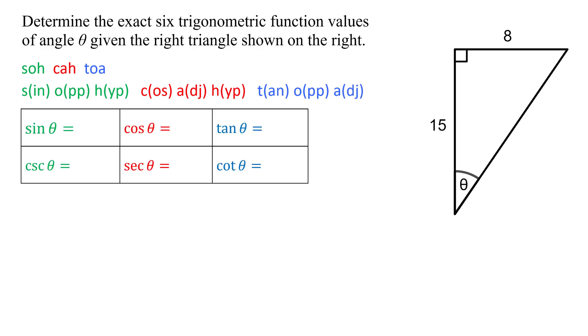So what I need to do is fill in this table with values. Since I need to use the opposite, hypotenuse, and adjacent sides, I need to look at my triangle, and I have the two legs, but I do not have the hypotenuse.